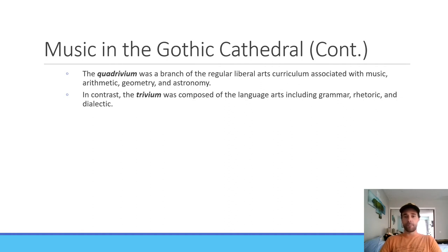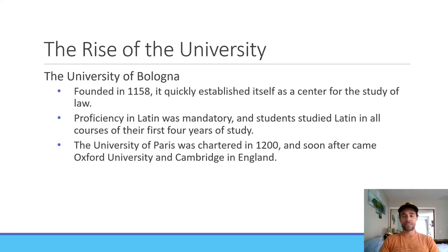We also see the quadrivium, a branch of arts curriculum focused on music, as well as branches of study such as astronomy, geometry, and arithmetic. This is in contrast to the trivium, which focused primarily on language arts, grammar, and rhetoric. It's with these curricula and unified study programs that we begin to see the rise of organized education.